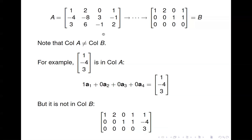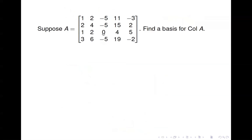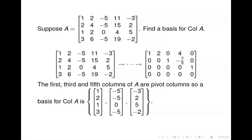Here's an example: given a matrix A, find a basis for its column space. Put it in echelon form and find that pivot positions occur in the first, third, and fifth columns. Therefore, go back to the original matrix A and take the first, third, and fifth columns as a basis for the column space of A.